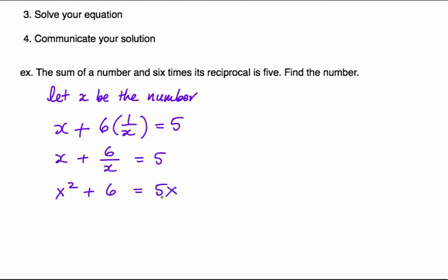To solve, I need to make it equal to zero. So subtract 5x on both sides, make it equal to zero, and factor it. This factors to x minus 3, and x minus 2. And so I have some solutions, 3 and 2.